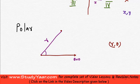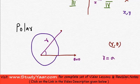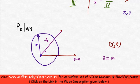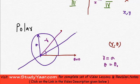Just understand one thing here: r equal to a is a circle in polar coordinates — a circle having center at the pole and radius equal to a. So when I say r equal to a, I am saying this distance is equal to a. And θ equal to θ₀ is a line that passes through the pole at an angle of θ₀, or in other words a line through the pole having a slope of θ₀.